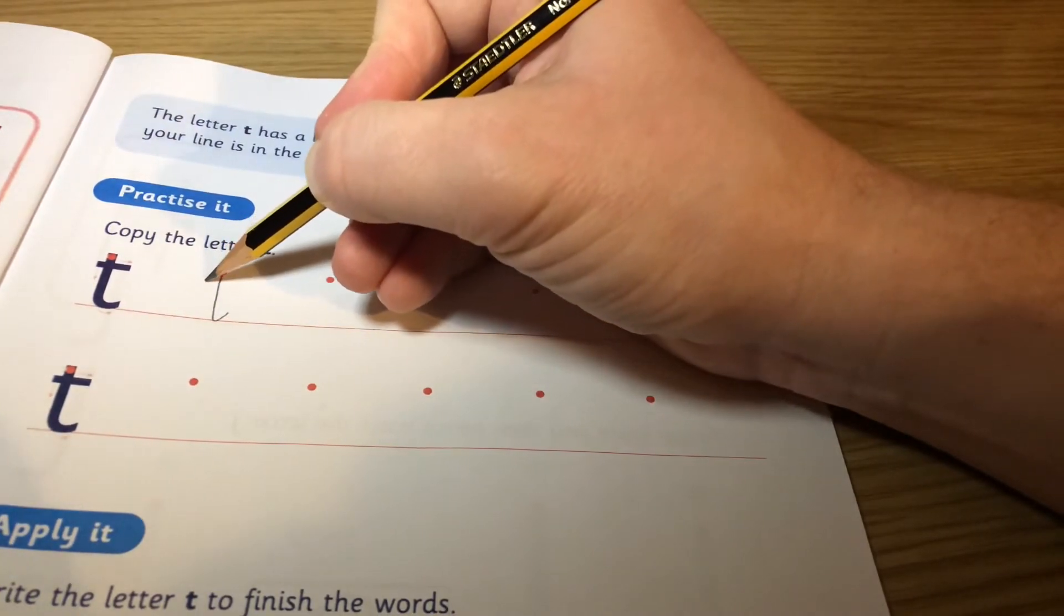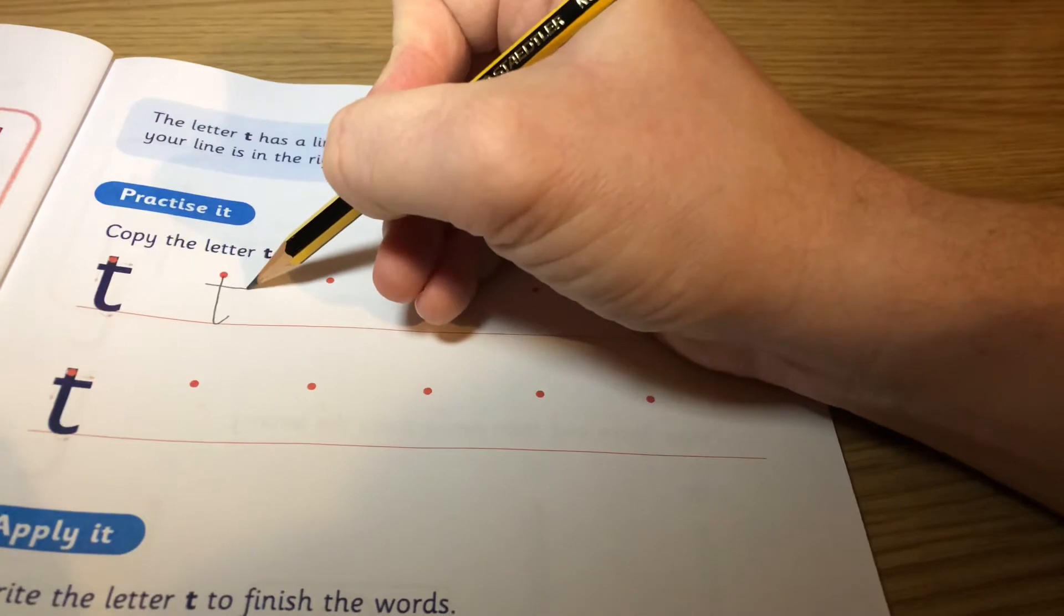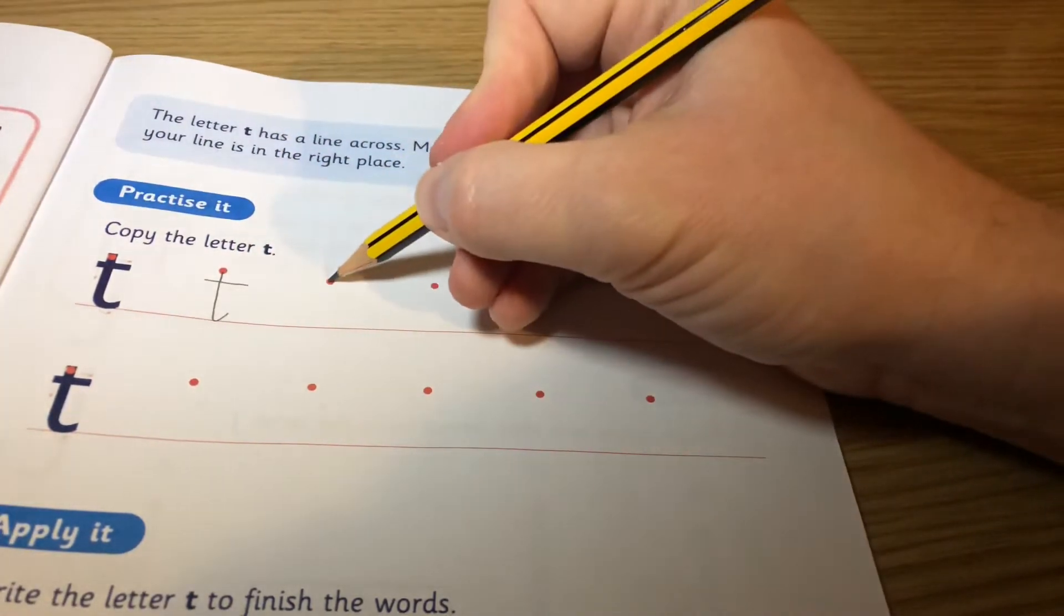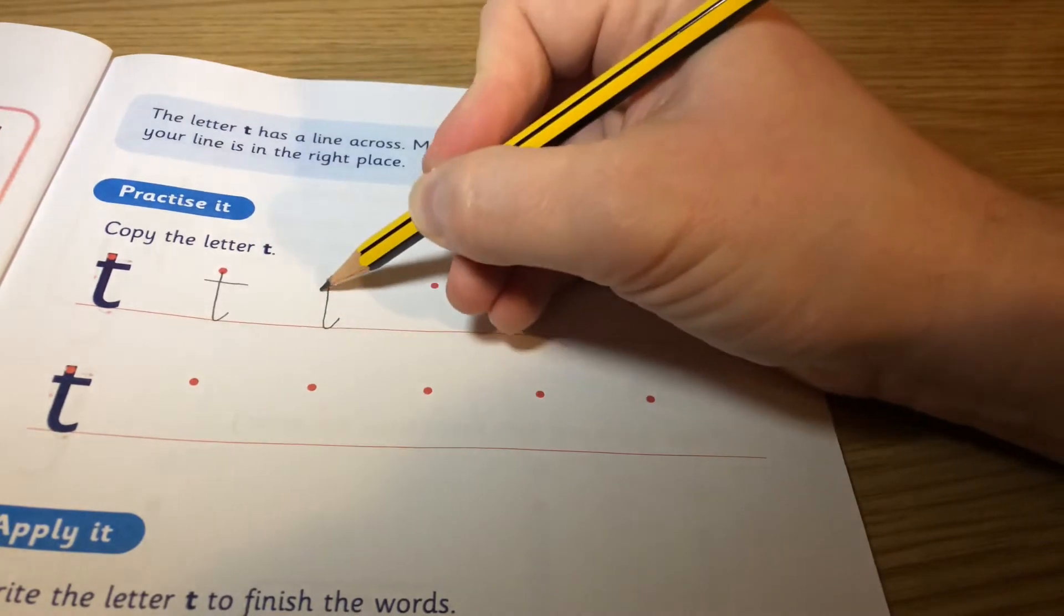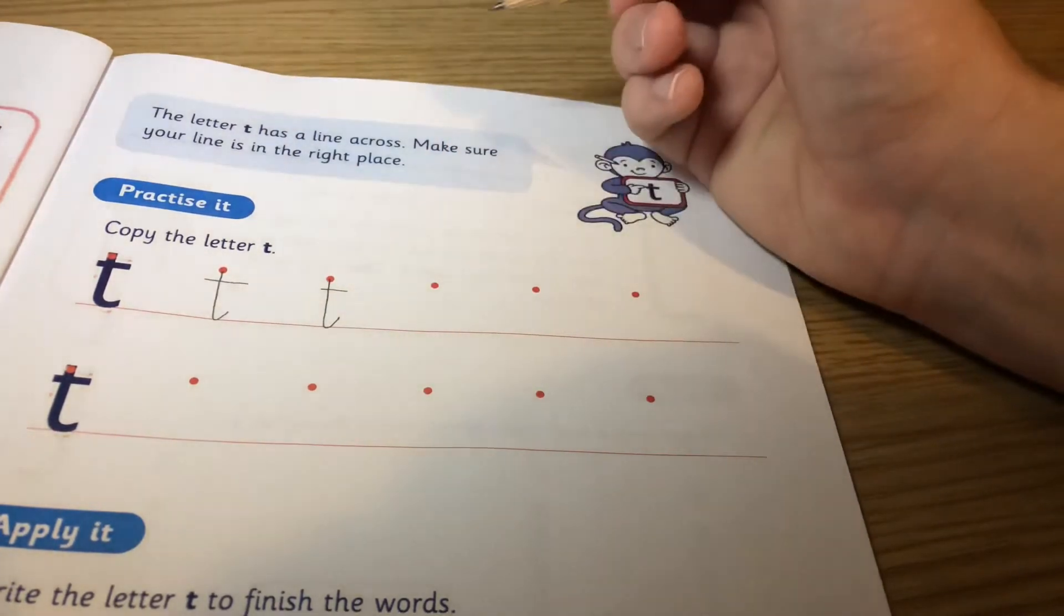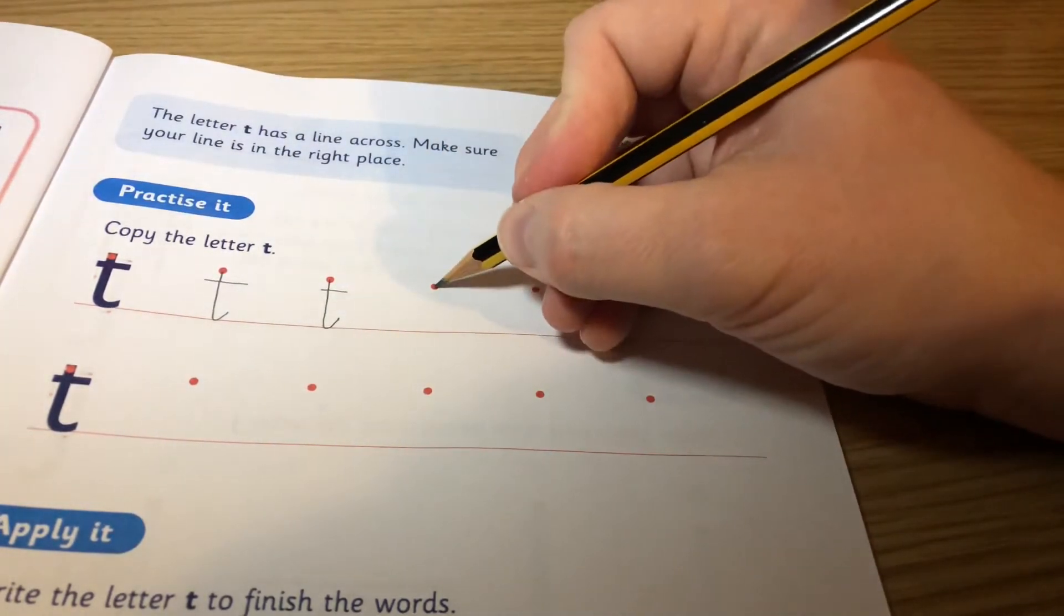and then do the line across. Again, down, flick, and then across. You reckon you can do that? Just take your time.